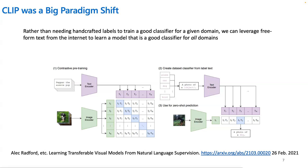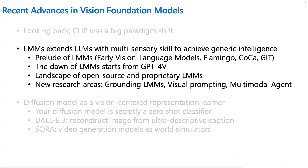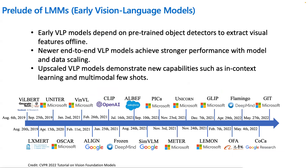CLIP has proven to be an efficient learner to extract intelligence from image-text pairs. The past year was the year of large multi-modal models. Here I want to make a connection between LMMs and the early vision language models. Early vision language models served as the prelude to LMMs. This slide is from our tutorial in 2022 and highlights the evolution of early vision language models — from UNITER proposed in 2019, to FLAMINGO, COCA, and GIT proposed concurrently in May 2022. This evolution underscores why we initiated this tutorial series and continue to track advances in this exciting field for the past five years.